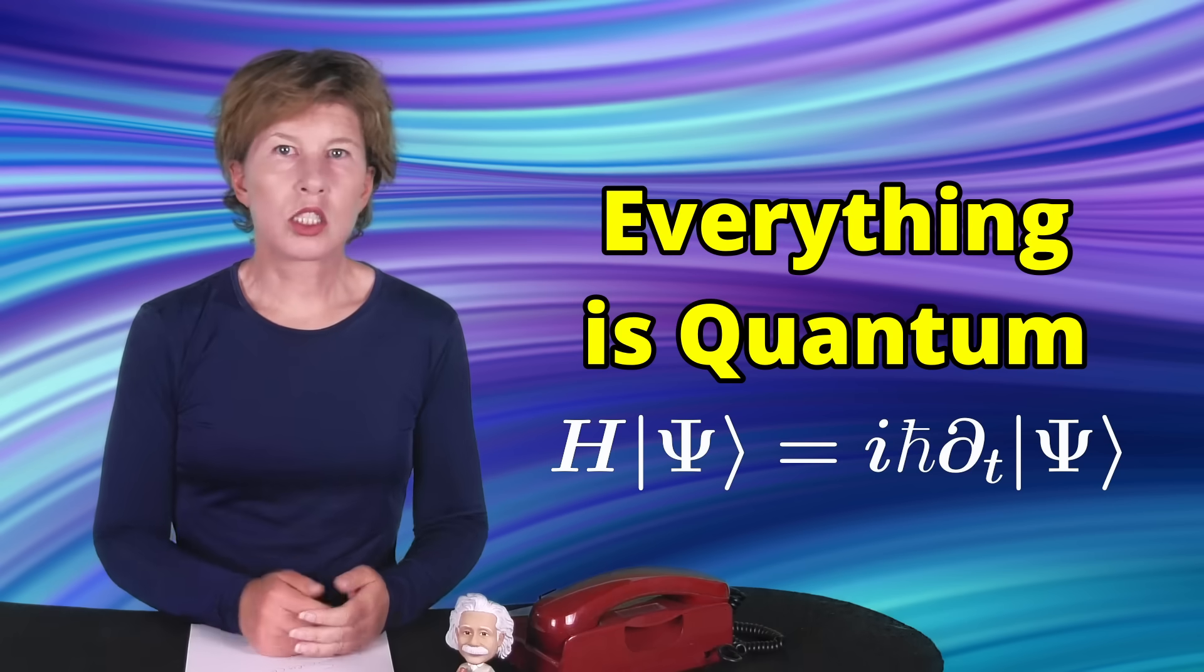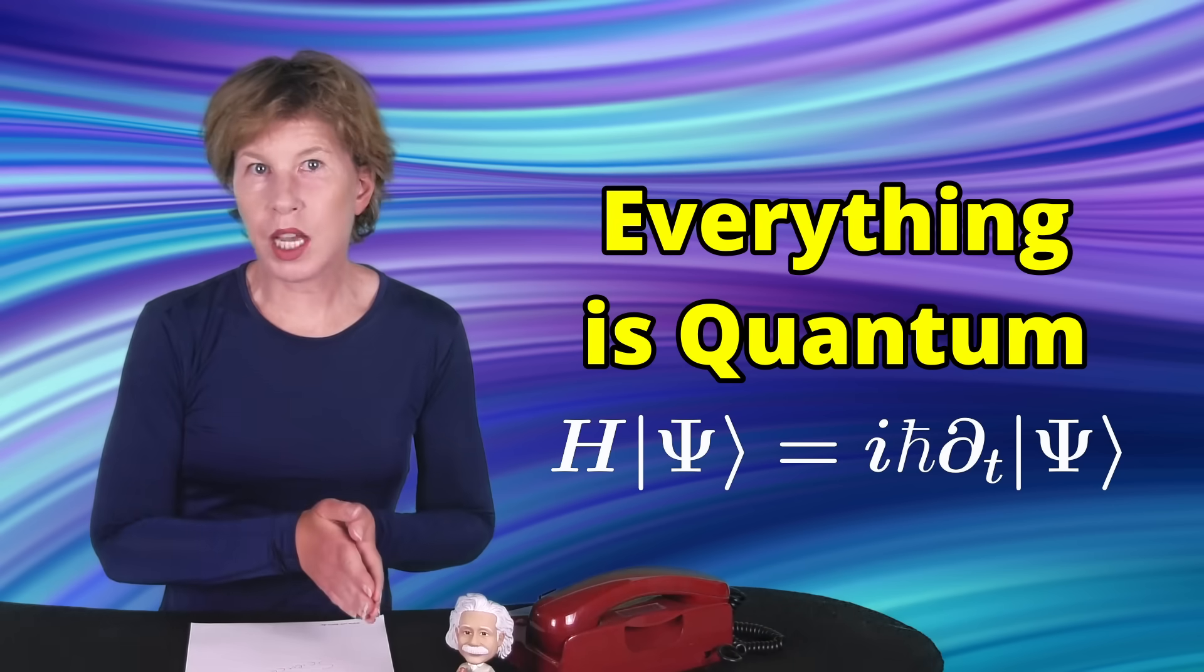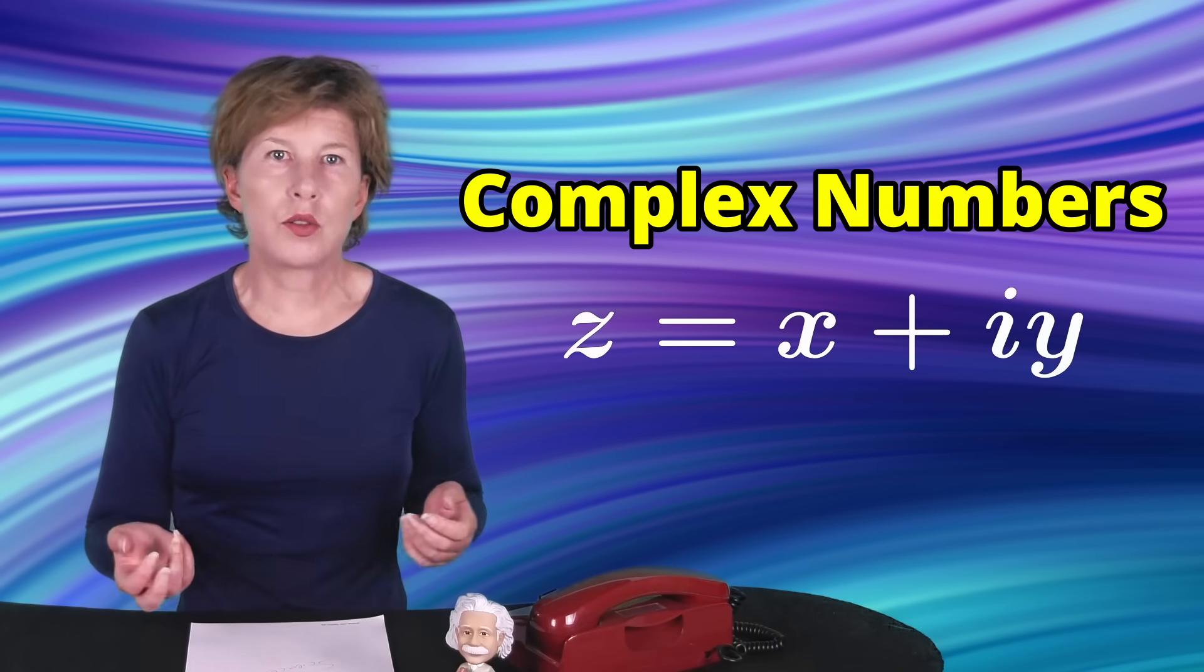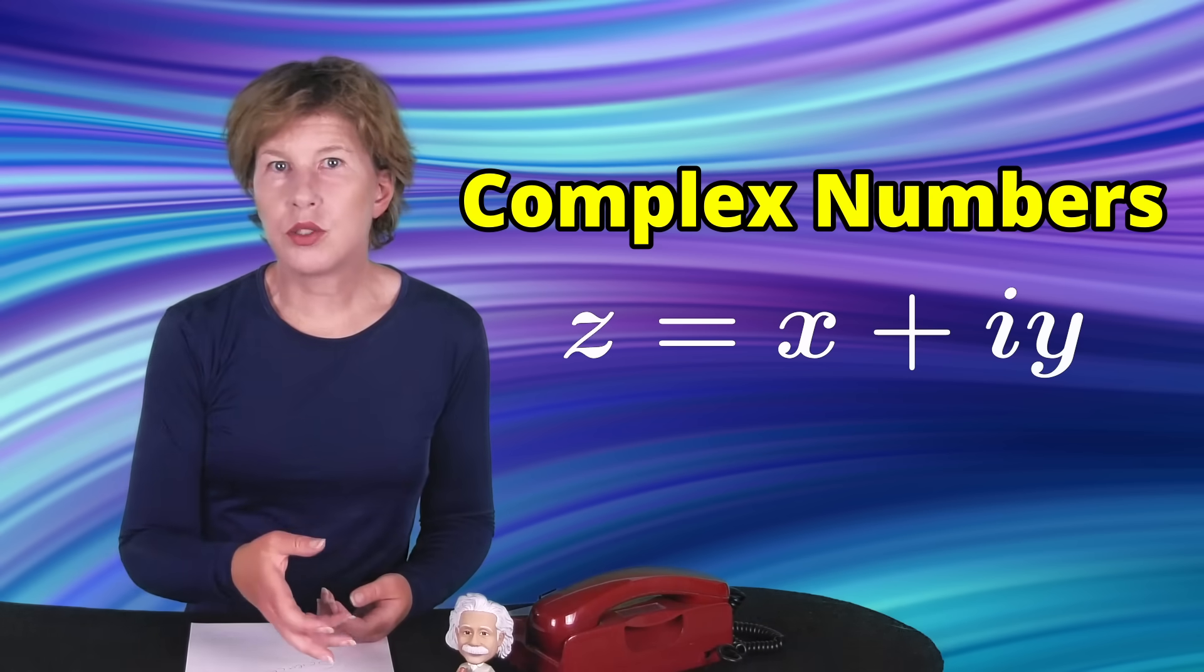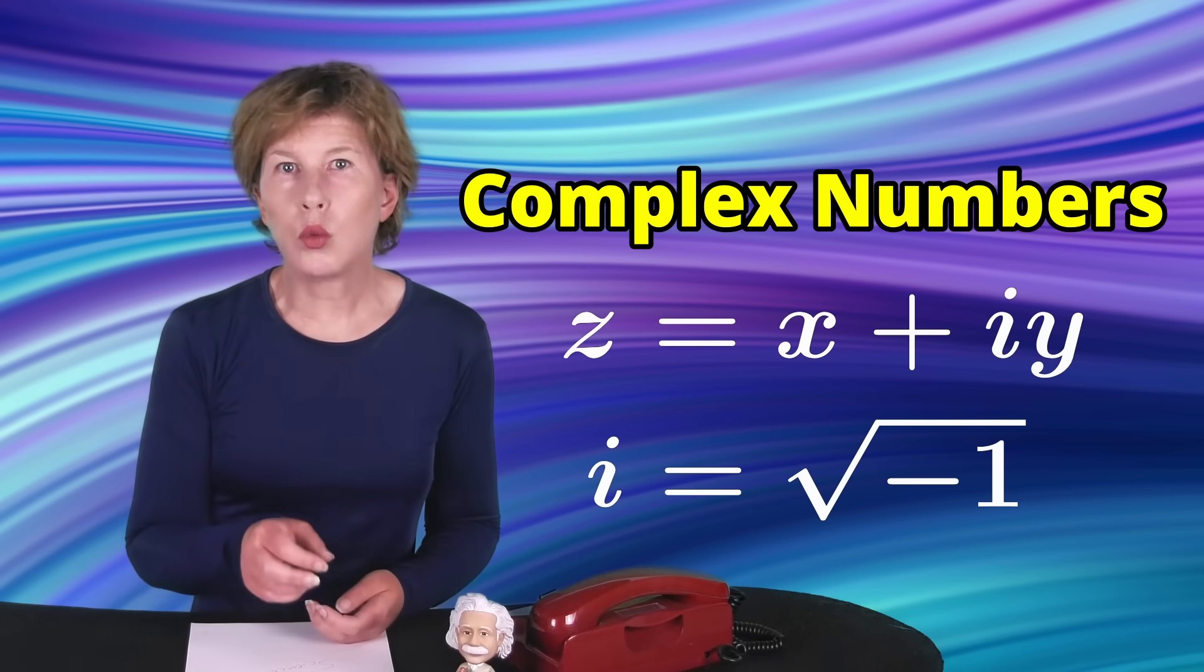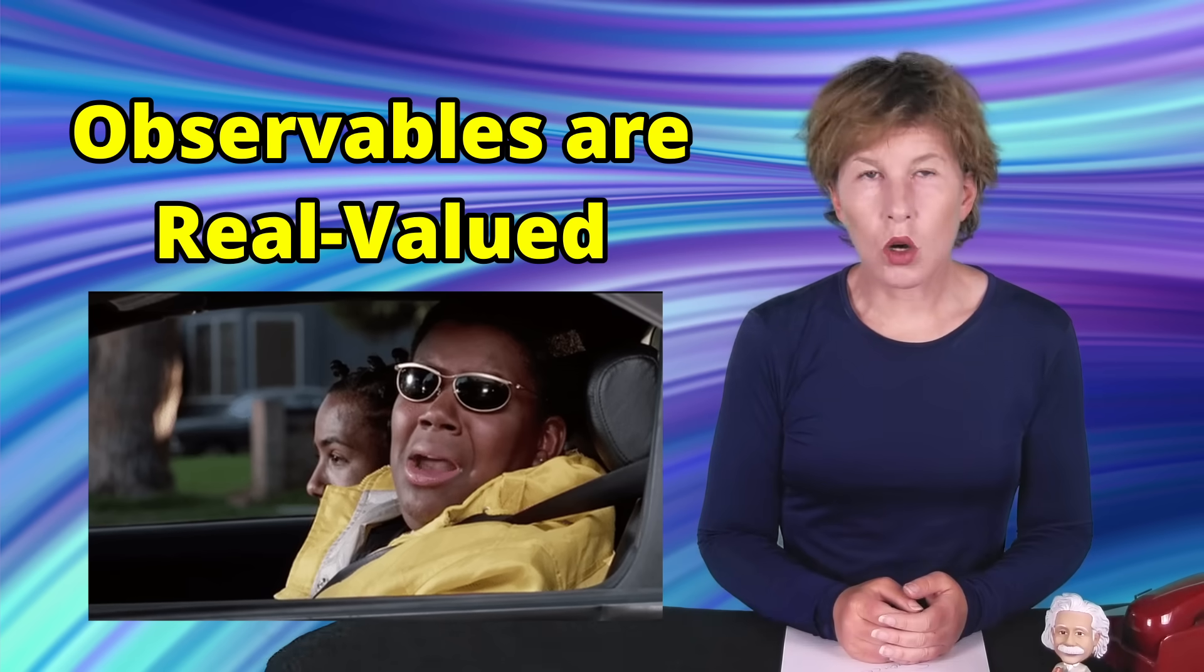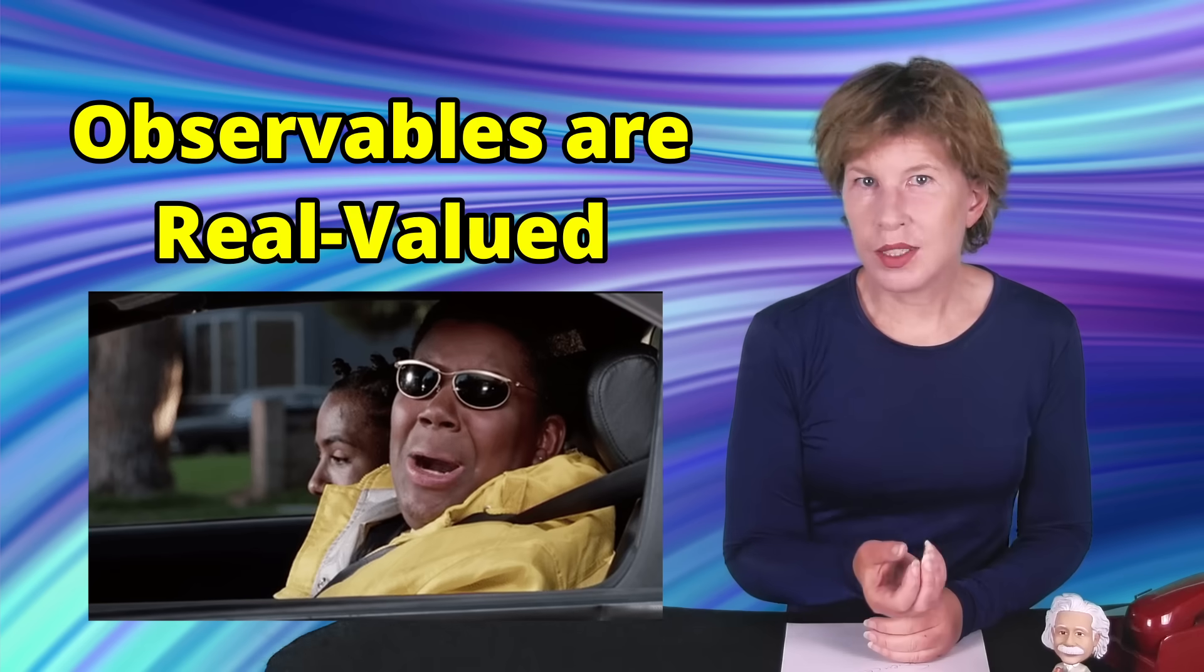9. Why real numbers? According to physicists' best current theories, nature deep down is all quantum theory. Quantum theory is based on complex numbers, those with a real and an imaginary part that require using the square root of minus 1. Yet, for some reason, everything we can observe is always a real number. I find this incredibly odd. Why is the observable world only based on real numbers?